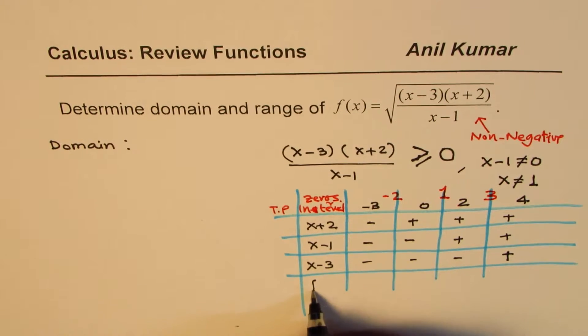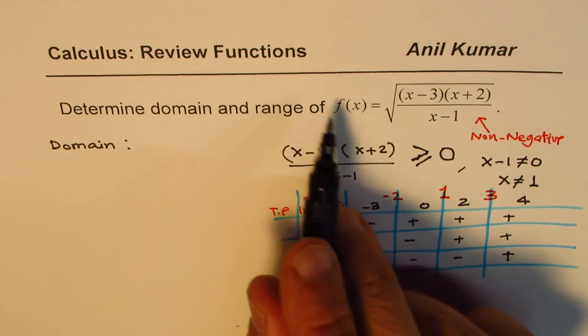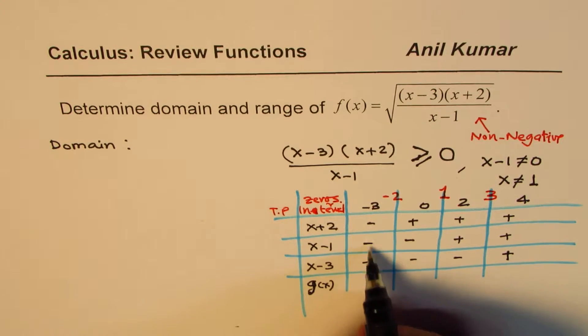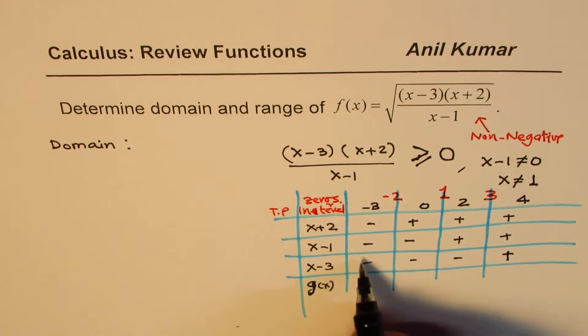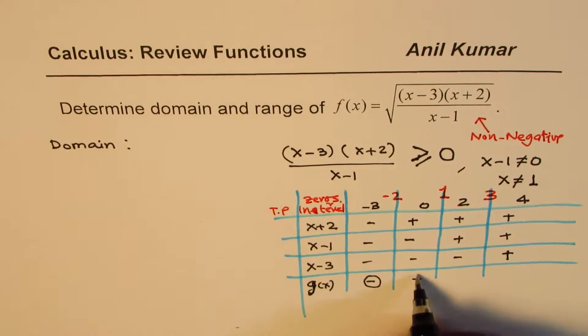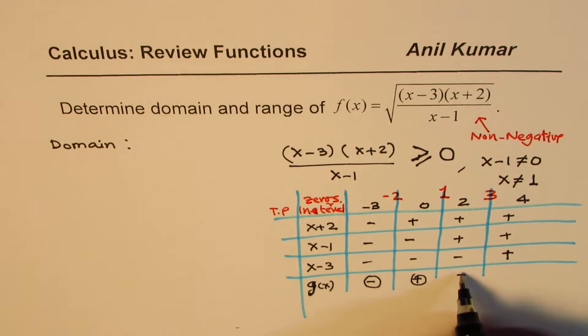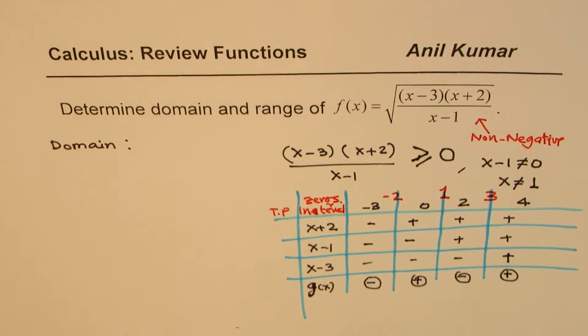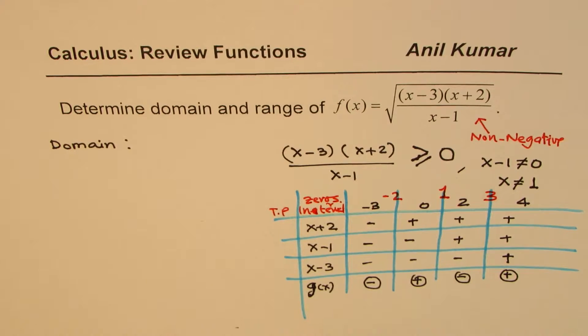Now, as far as this function is concerned, let me write g of x, because f of x is square root of g of x. Now, that we get by multiplying these factors. Because 3 negatives, when you multiply, you get negative. 2 negatives will give you positive. 1 negative will give you negative. 4 positives, when you multiply and divide, you get positive.